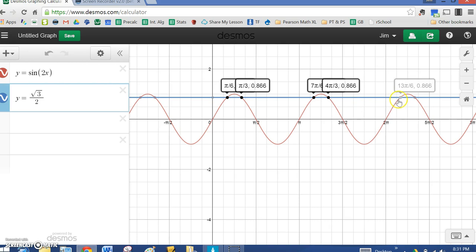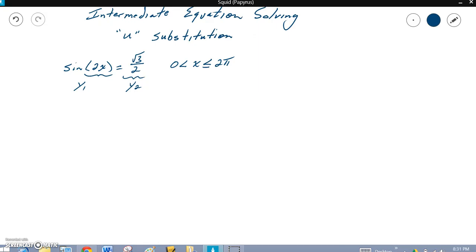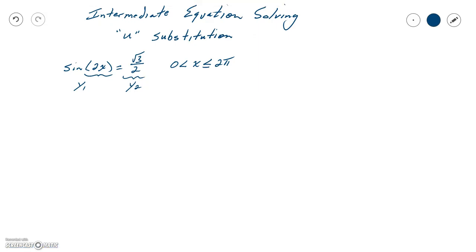I could go over here to 13π over 6, but that would be past 2π. 12π over 6 is 2π, so 13π over 6 is a little bit over that. Same is true down here. I could go negative 2π over 3, but that's not between 0 and 2π. So I'm looking for these four answers, and we're going to show you how to do that using u substitutions.